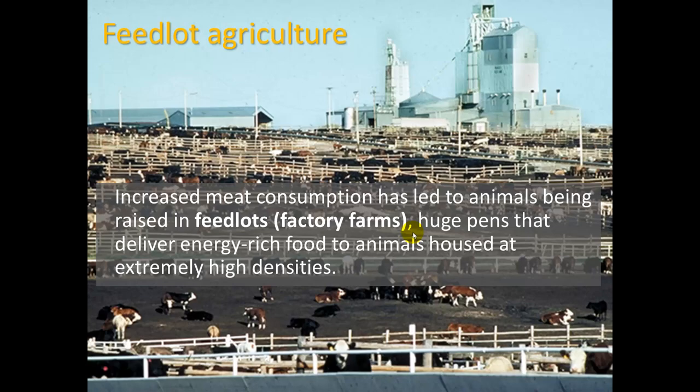This has led to feedlot agriculture. Increased meat consumption has led to animals being raised in feedlots, or called factory farms — huge pens that deliver energy-rich food to animals housed at extremely high densities. Here we can see a cattle feedlot.